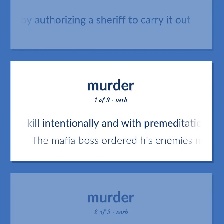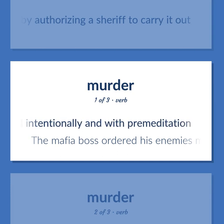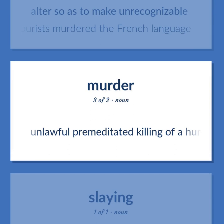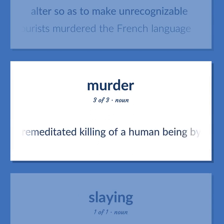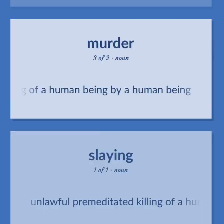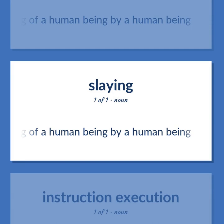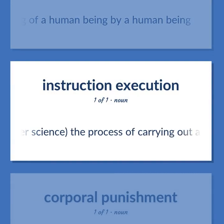Murder: Kill intentionally and with premeditation. The mafia boss ordered his enemies murdered. Alter so as to make unrecognizable — the tourists murdered the French language. Unlawful premeditated killing of a human being by a human being. Computer Science: The process of carrying out an instruction by a computer.